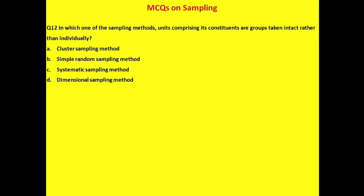Question 12: In which sampling method are units comprising its constituents taken as groups intact rather than individually? Options: cluster sampling, simple random sampling, systematic sampling, or dimensional sampling.